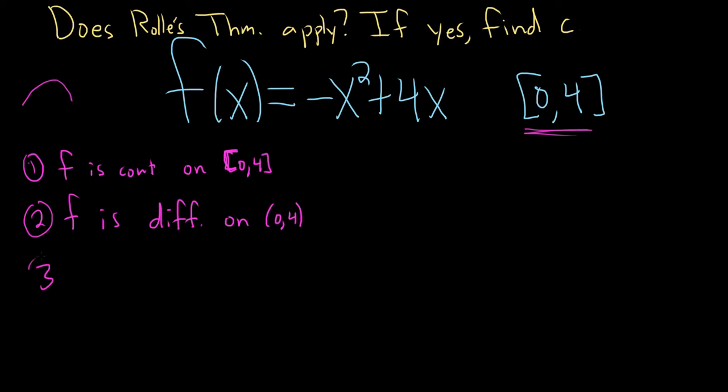And the third condition of Rolle's we should definitely check. It's basically when you plug in these numbers, when you plug in 0 and 4, you have to get the same answers. Let's check that. So f(0) is going to be negative 0 squared plus 4 times 0, so that's equal to 0.